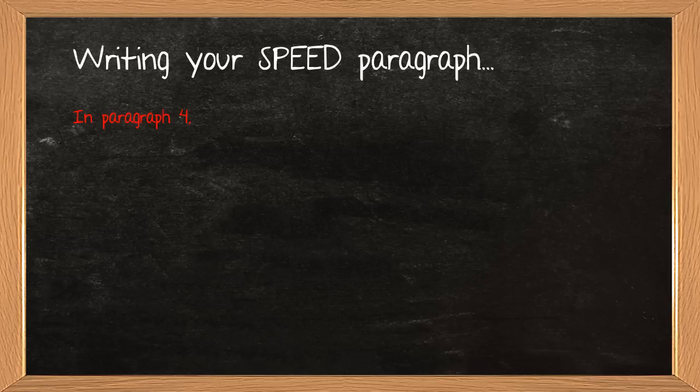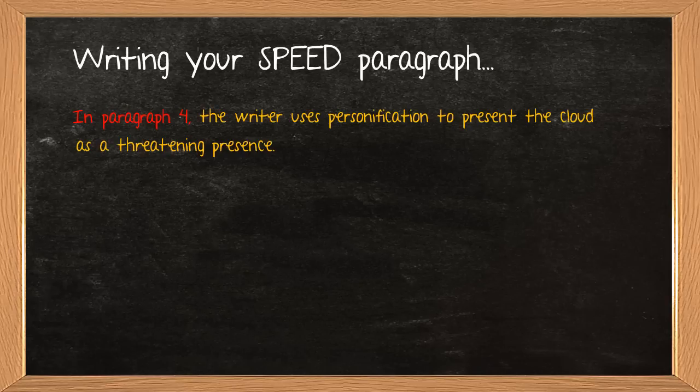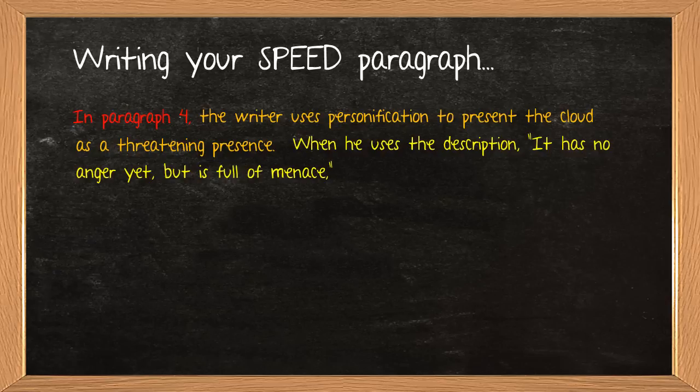If you know what needs to be in SPEED, it should be really simple to follow that structure. Start off with your signpost, and it can be as simple as in paragraph four, or firstly in paragraph four, however you want to do it. Then you're going to move on to your point, and you're going to try and throw in your terminology, if you know it confidently. If not, then just put the writer uses words and phrases. But try and say specifically, how is it presenting it? And answer the question. Look at what the question was asking you to. So it was asking you, how does the writer present the appearance of the cloud? So I've put the writer uses personification to present the cloud as threatening presence. So I've answered the question there, used my terminology. Then I'm going to throw in my quotation. I'm going to try and embed it a little bit, so it flows nicely. So when he uses the description, it has no anger yet, but it's full of menace.